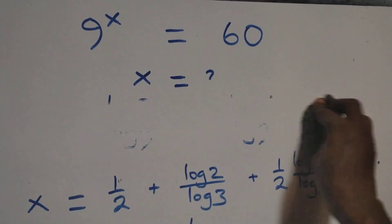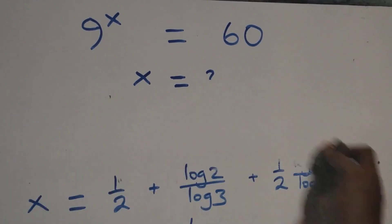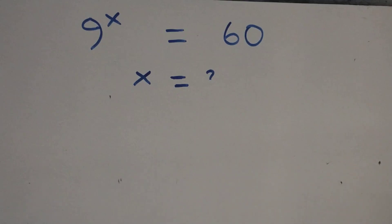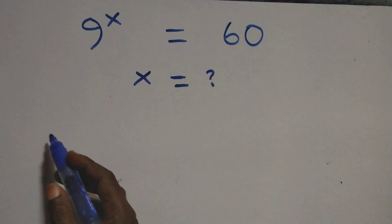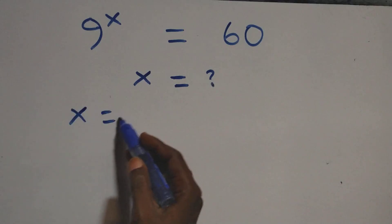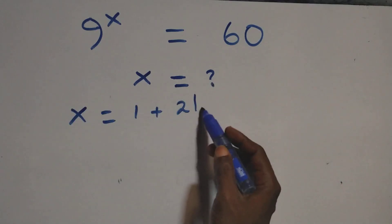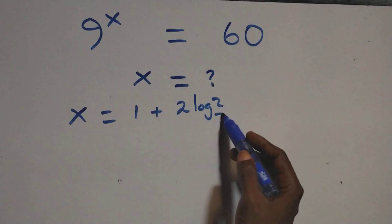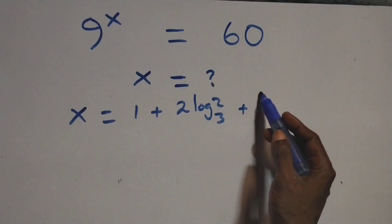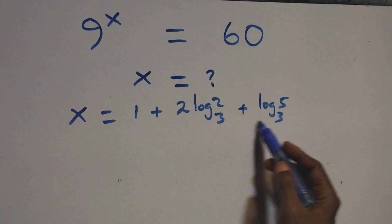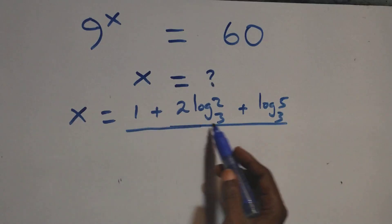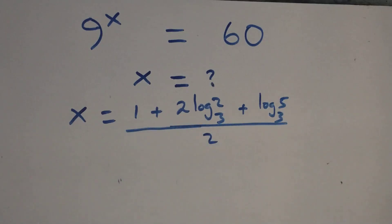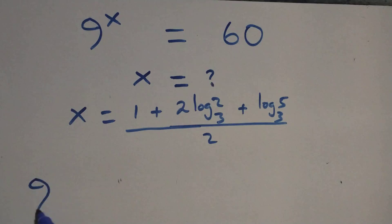Let's verify this satisfies the original equation. We substitute x = (1 + 2·log_3(2) + log_3(5)) / 2 back into 9^x, giving 9 raised to the power (1 + 2·log_3(2) + log_3(5)) / 2.